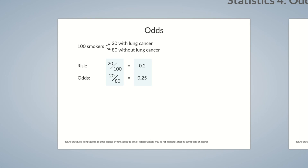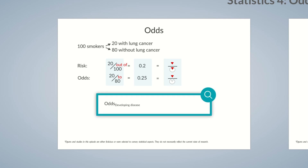Therefore, the difference between risk and odds lies only in the comparative value — that is, the denominator of the fraction. This difference can also be memorized using a pie chart. To calculate the risk, a slice of cake is divided by the entire cake. To calculate the odds value, a slice of cake is divided by the rest of the cake that remains on the platter. This is also reflected in the wording: the risk of smokers can be described as 20 out of 100, whereas the odds represent a chance of 20 to 80.